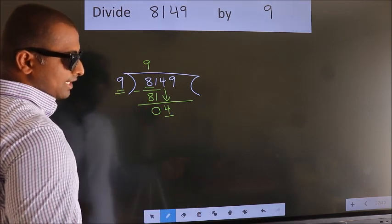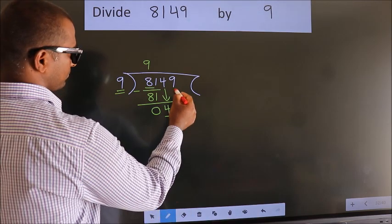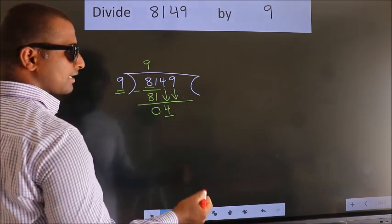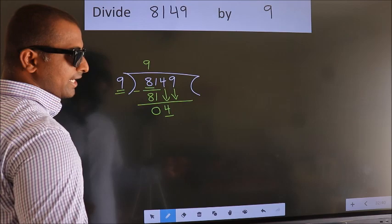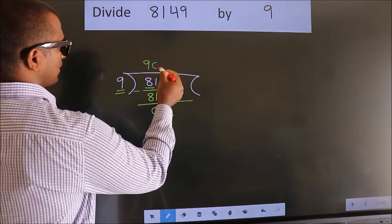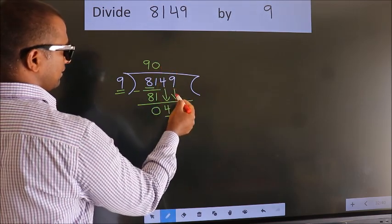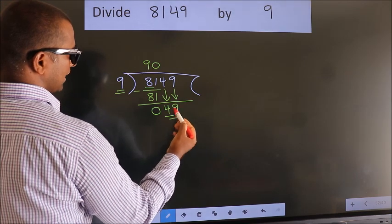So we should bring down the second number. And the rule to bring down the second number is put 0 here. Then only we can bring down this number. So, 49.